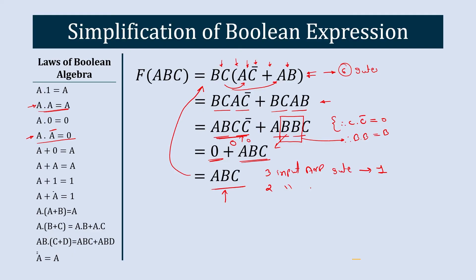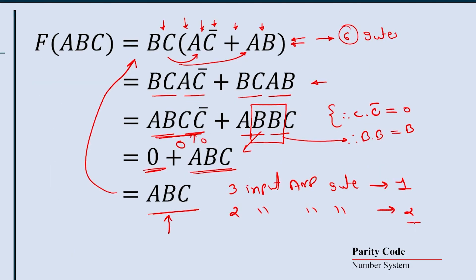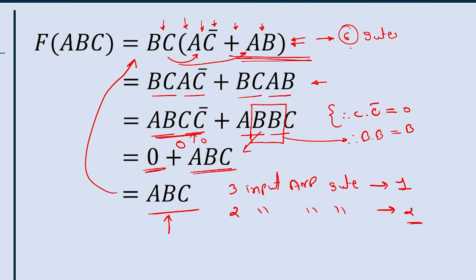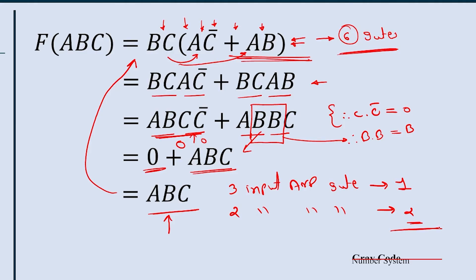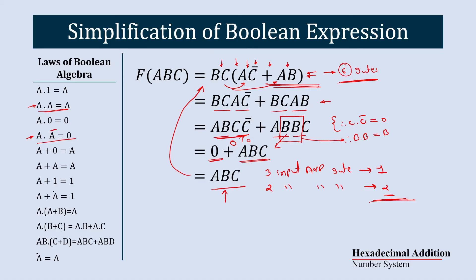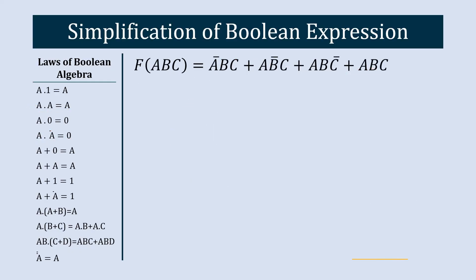Previously we needed six gates, and now we need only two gates. That is the impact of the simplification process. That equation was quite simple — now we will move on to a slightly more complex equation.